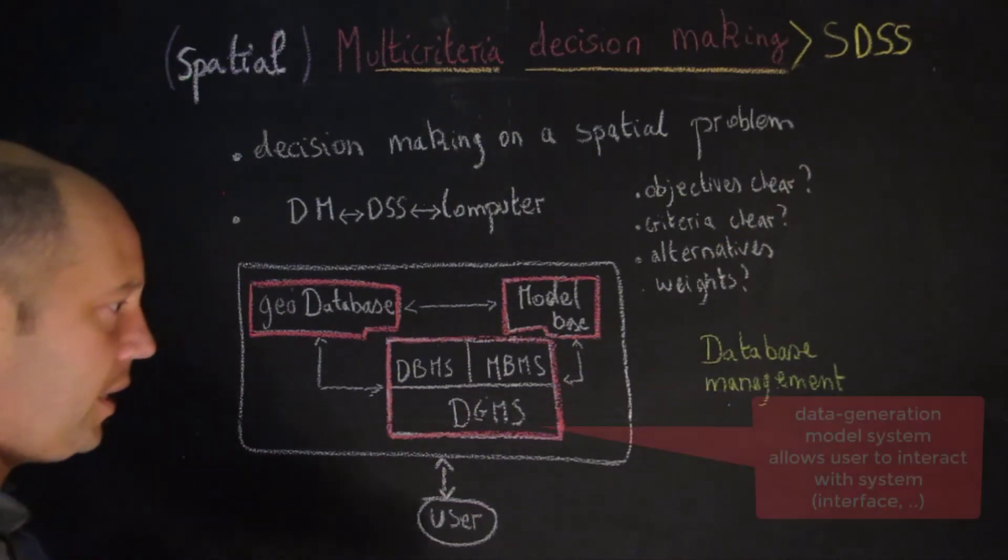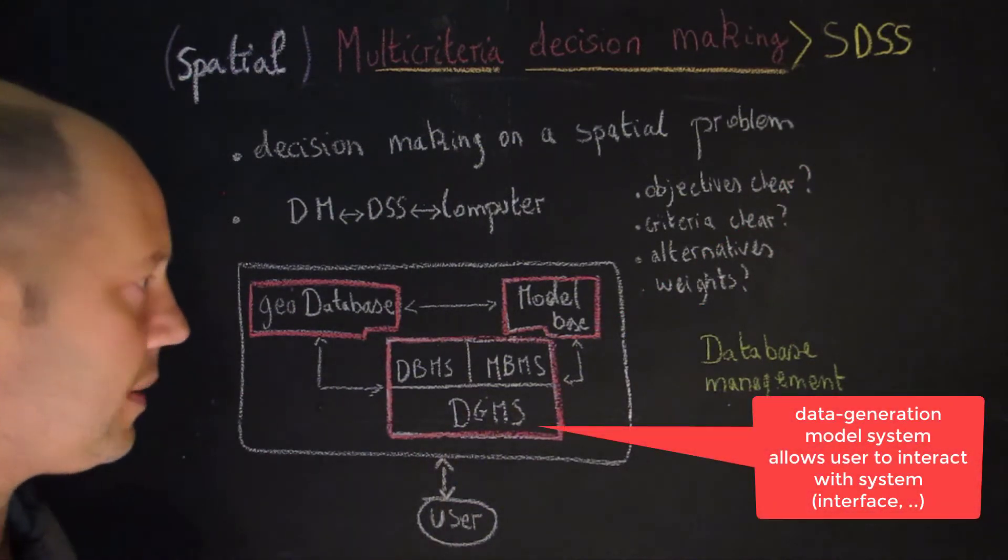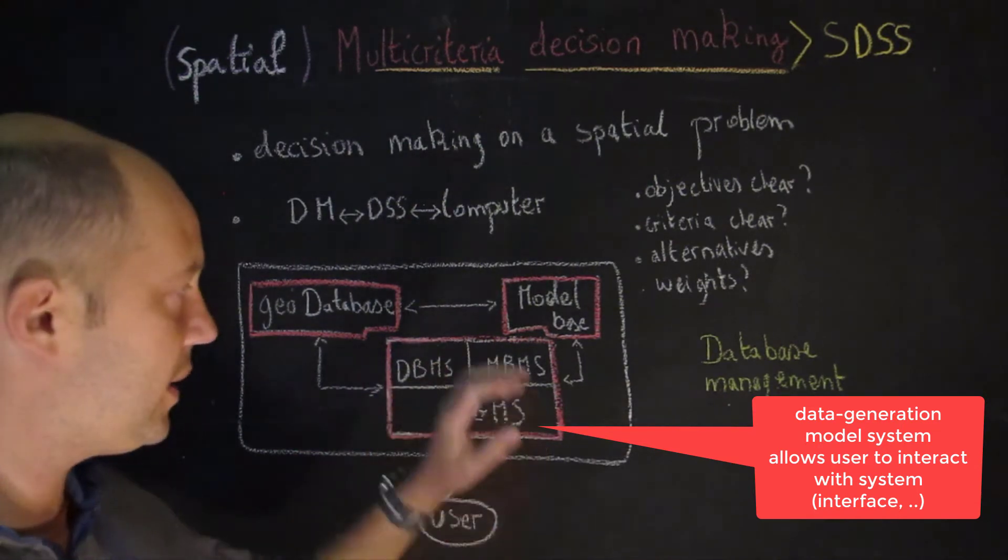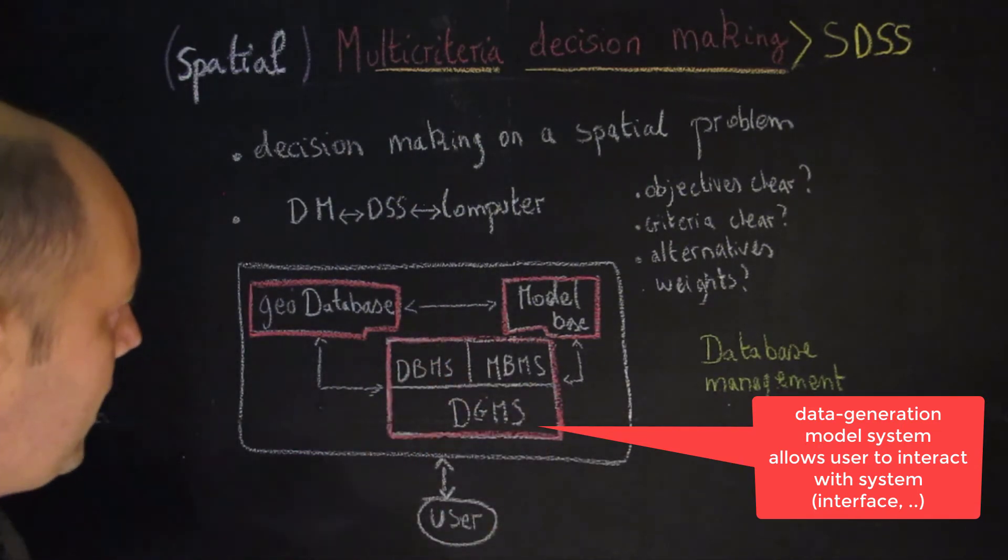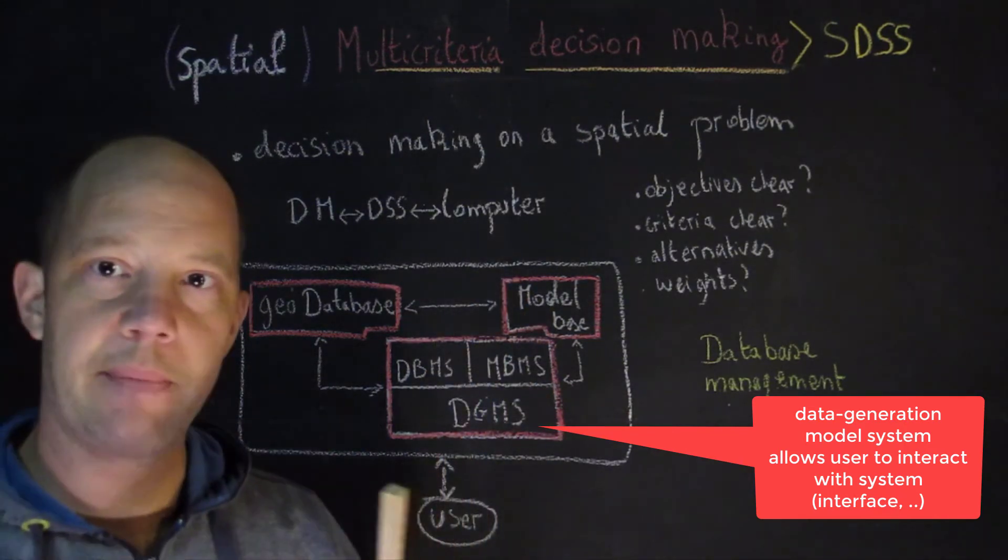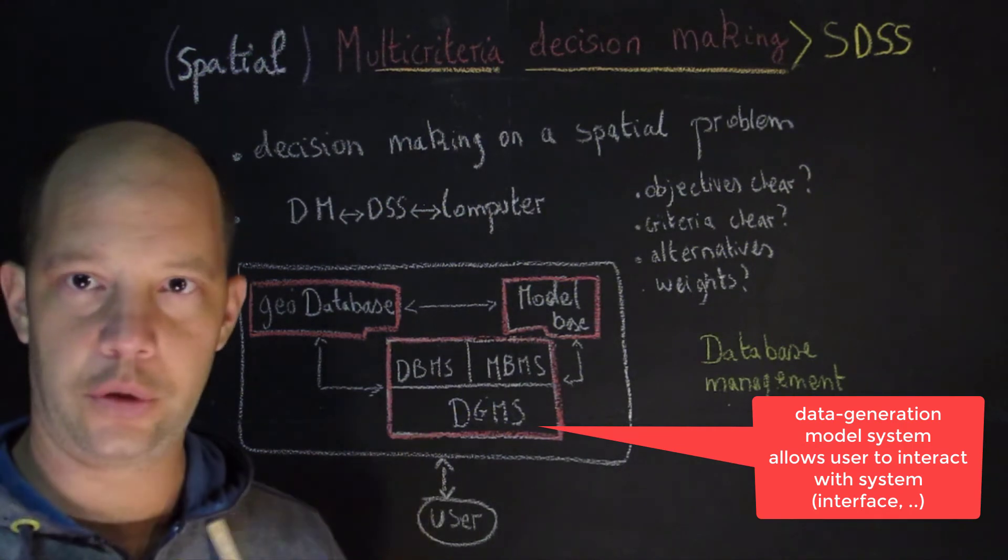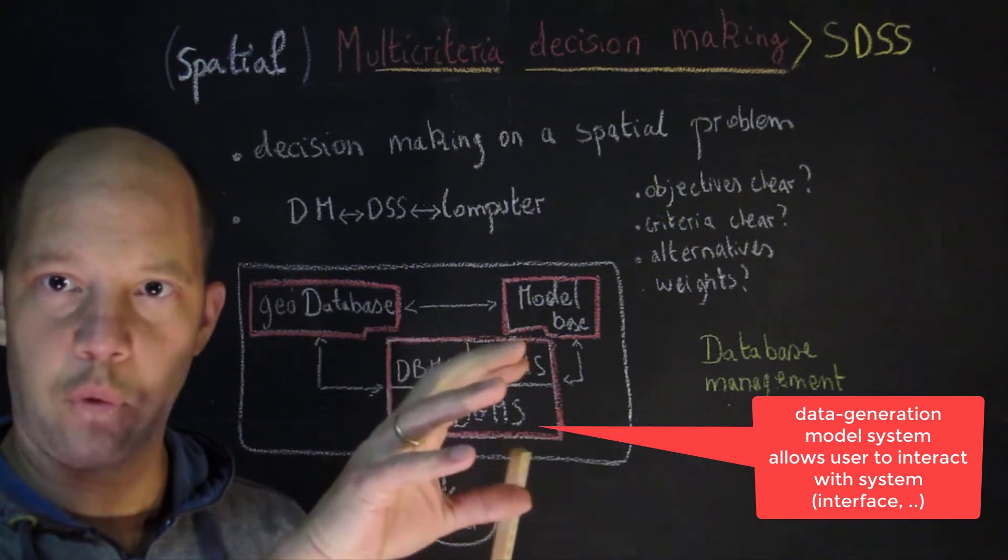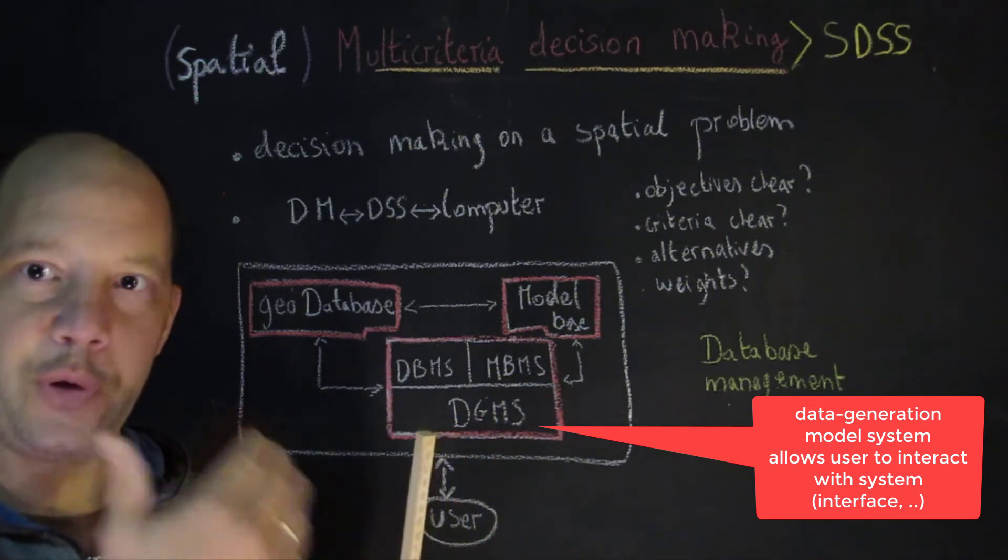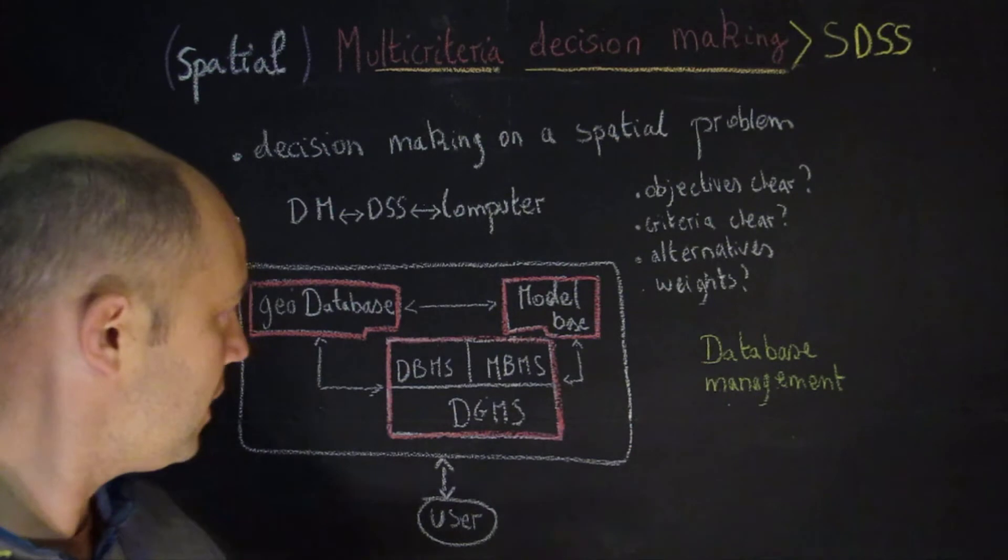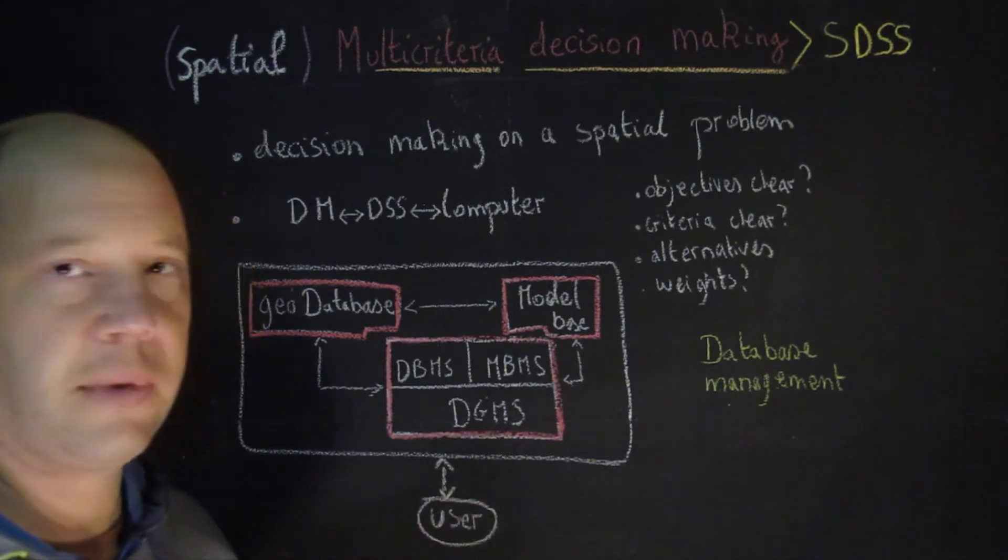Lastly, the data generation management system is really the piece that will connect the user to this system. That is essentially what the user will see. So this is maybe the interface we're talking about. What kind of dialogue do we have? Do we have a pull-down menu? Do we have different queries? How easy is it for the user to interact with that system? That is the purpose of the data generation management system.